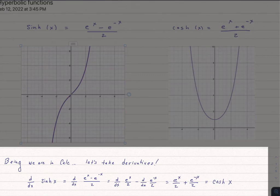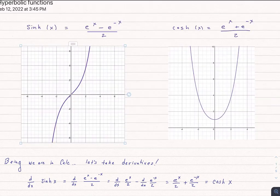that is just cosh, which shouldn't surprise us because the derivative of sine is cosine. And it's kind of nice that the derivative of sinch is cosh.